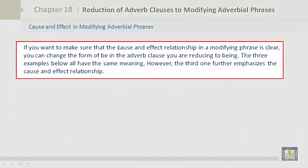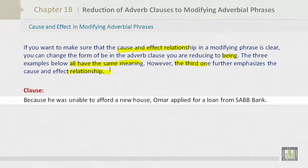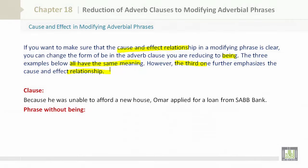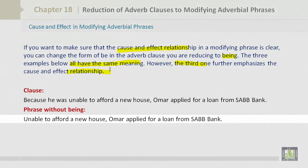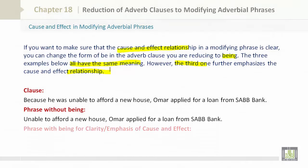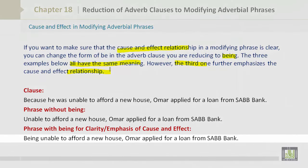If you want to make sure that the cause and effect relationship in a modifying phrase is clear, you can change the form of be in the adverb clause to being. The three examples all have the same meaning, but the third further emphasizes cause and effect. Clause: 'Because he was unable to afford a new house, Omar applied for a loan from Saab Bank.' Phrase without being: 'Unable to afford a new house, Omar applied for a loan from Saab Bank.' Phrase with being: 'Being unable to afford a new house, Omar applied for a loan from Saab Bank.'